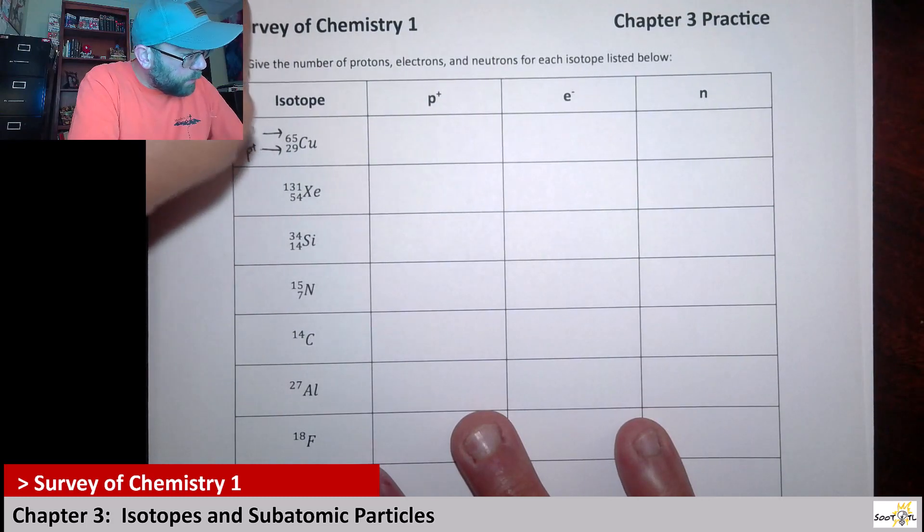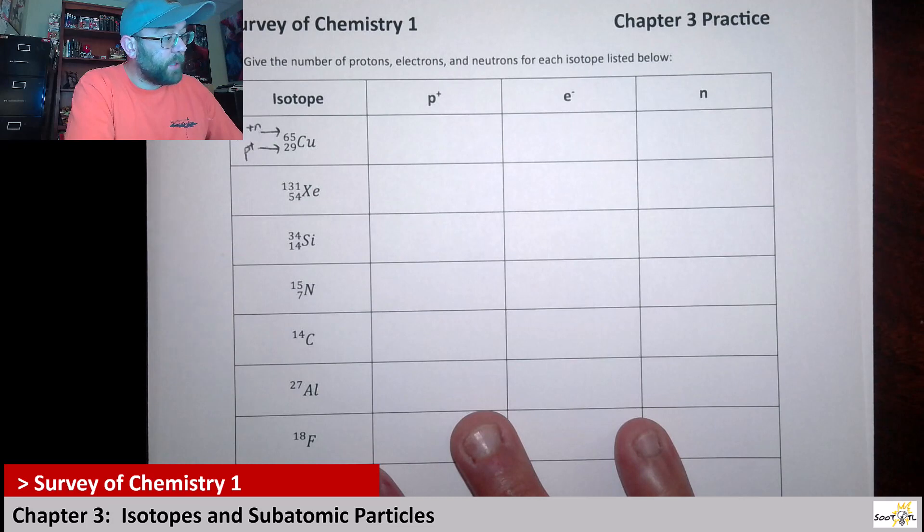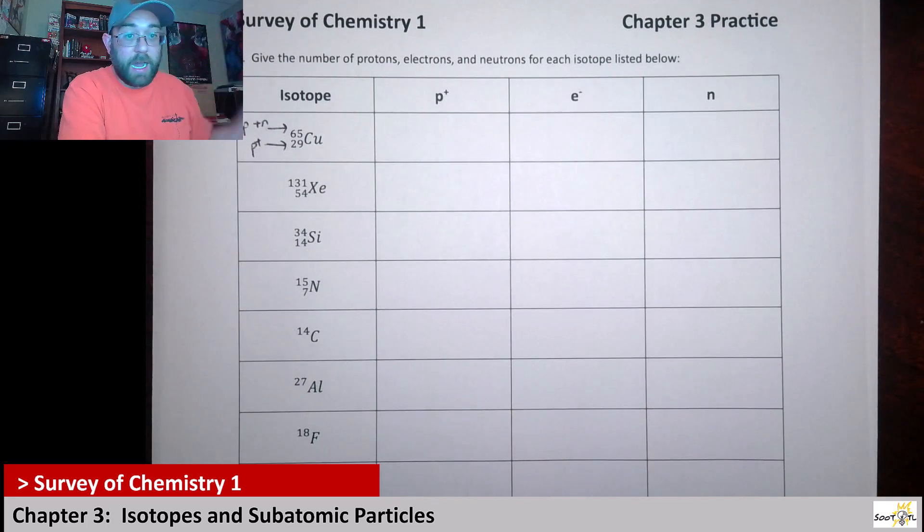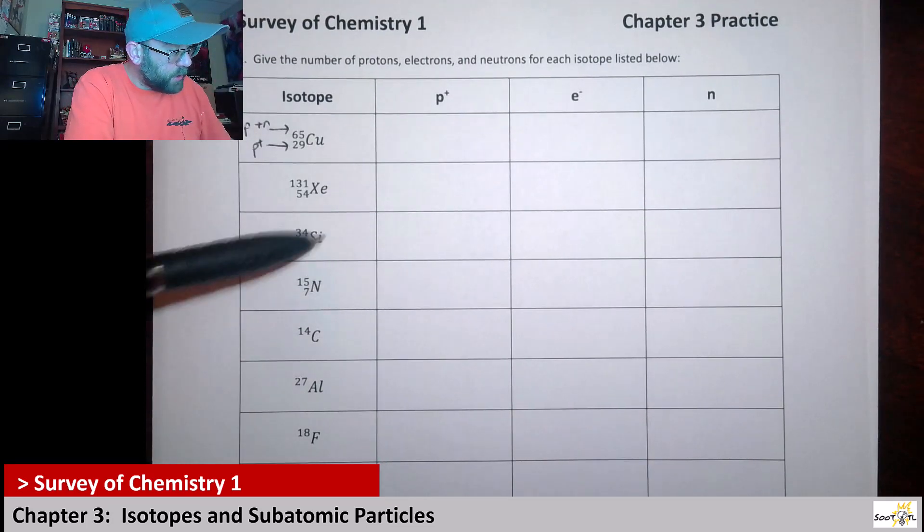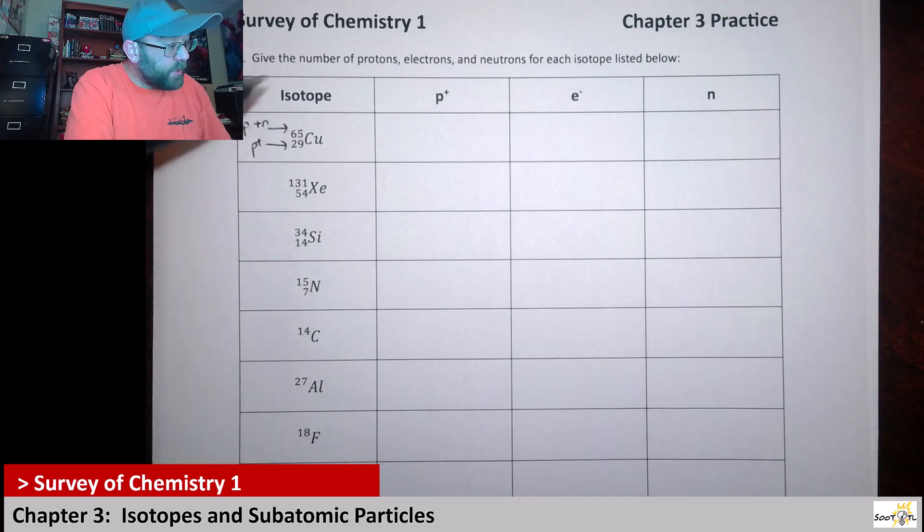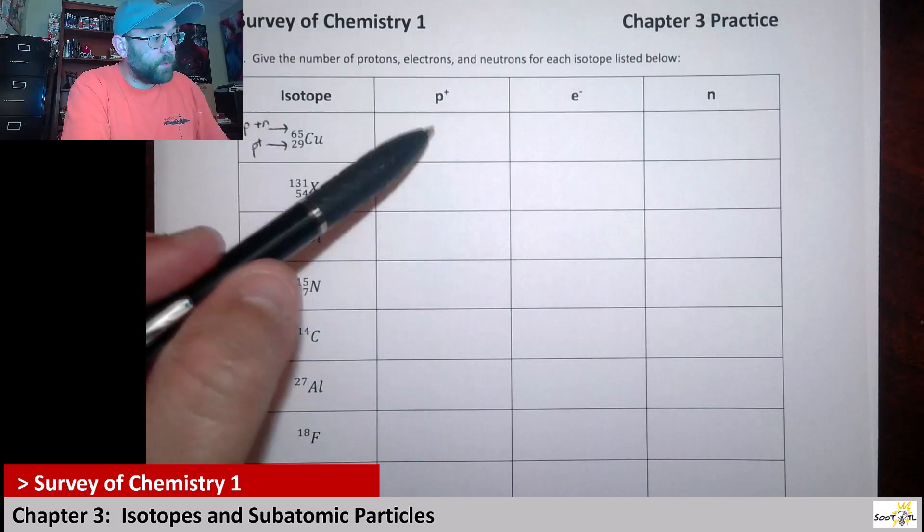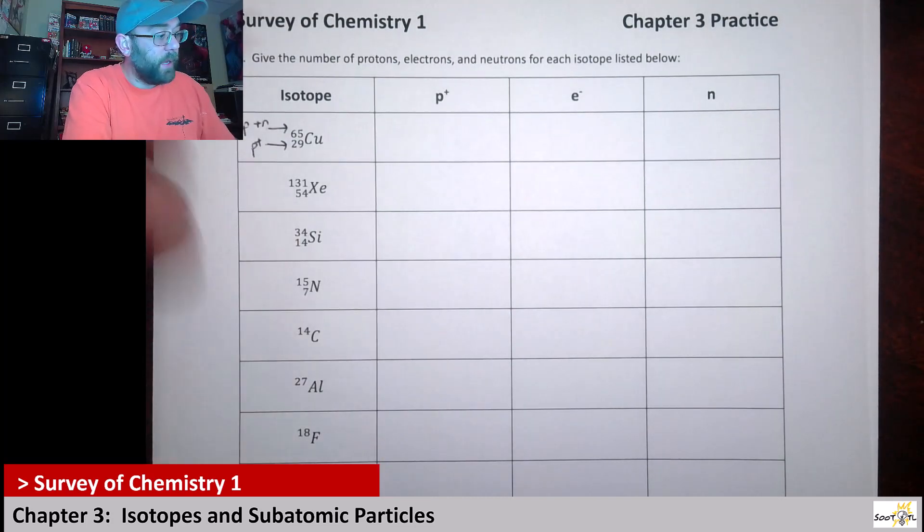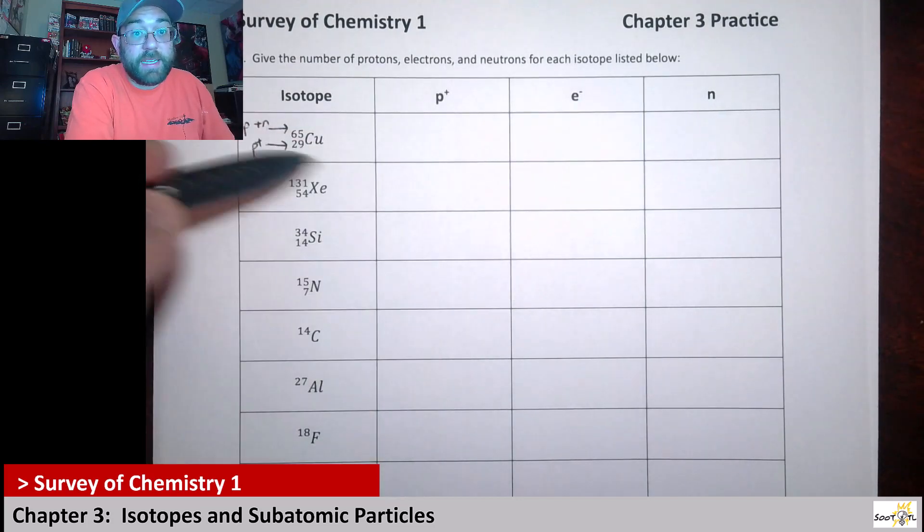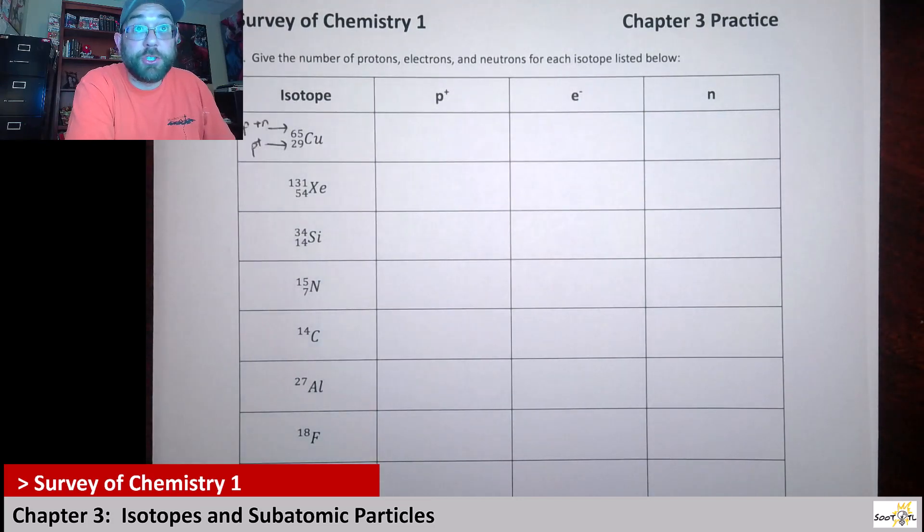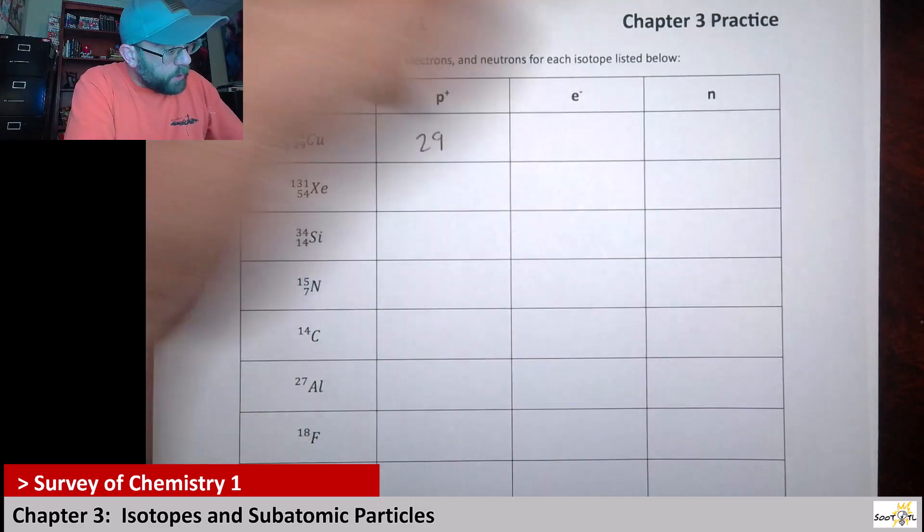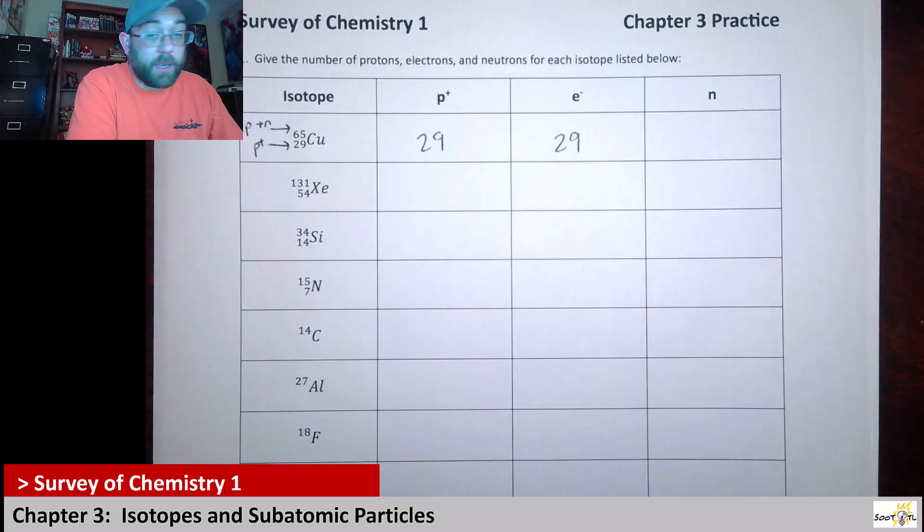So this right here tells us that it's got 29 protons, and then this is actually our protons plus our neutrons. For all of these options, you'll notice there's no charge specified here, so these are all fairly simple in terms of proton and electron count - they're the same, because these are not ions, these are all neutral atoms.